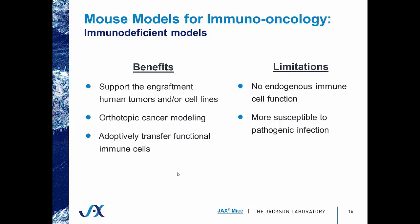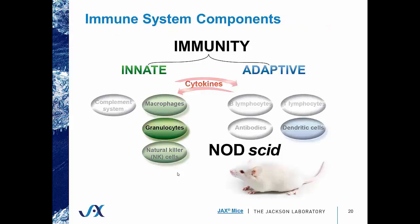Immunodeficient mouse models support the engraftment of human tumors and cell lines. They are also capable of orthotopic cancer modeling as well as adoptive transfer of functional immune cell populations from humans. Some limitations are that they do not have endogenous cell functions, and because of that, they are more susceptible to pathogenic infection. The first immunodeficient mouse model we're going to talk about are NODSCIDs — Non-Obese Diabetic Severe Combined Immunodeficiency mice.